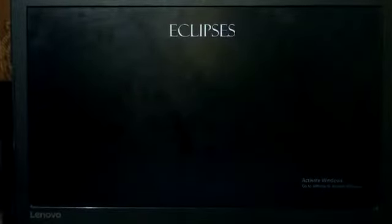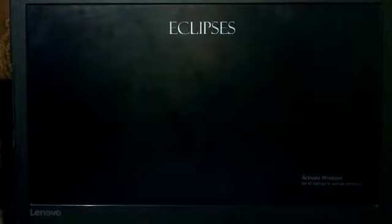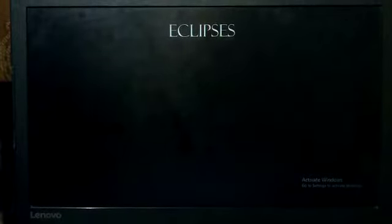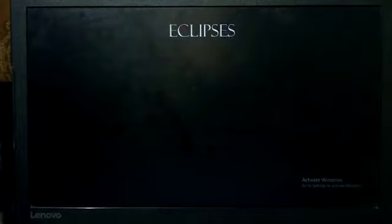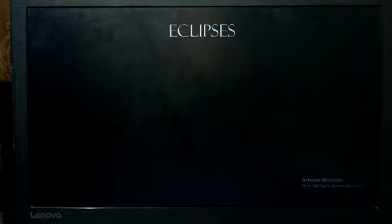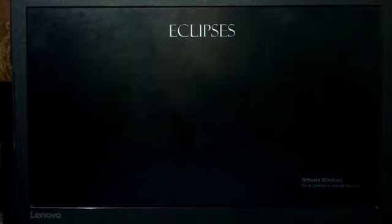So, when the earth or the moon block the sunlight, they also cast shadows. We see these shadows in the form of eclipses.